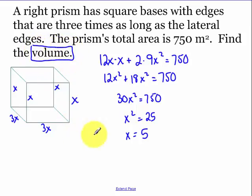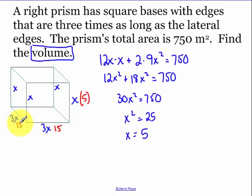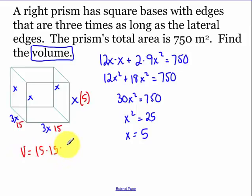Solving, x² equals 25, so x equals 5. That means the lateral edge is 5 meters, and the base edge is 15 meters. So the volume equals the area of the base times the height.